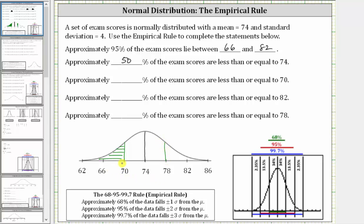But due to the symmetry of the bell curve, half of the percent is on the left of 74 and half is on the right. Half of 68% is 34%, which means approximately 34% of the data falls between 70 and 74, and approximately 34% falls between 74 and 78. We also know approximately 50% of the exam scores are less than or equal to 74, so to find the approximate percent less than or equal to 70, we take 50% minus 34%, which equals 16%.